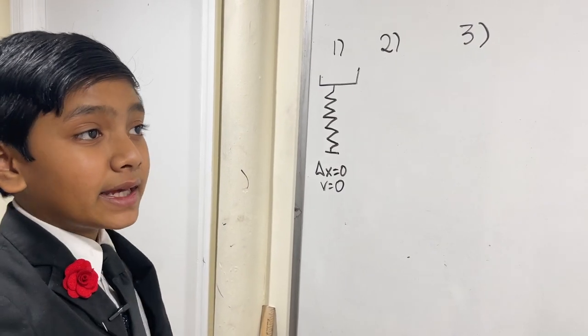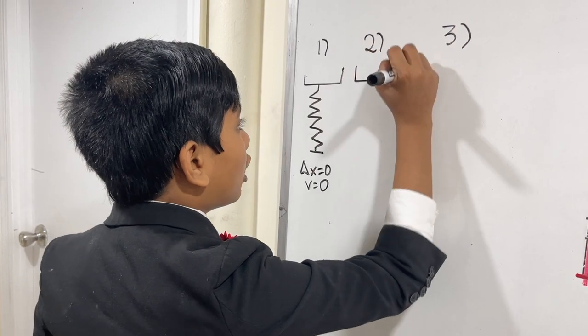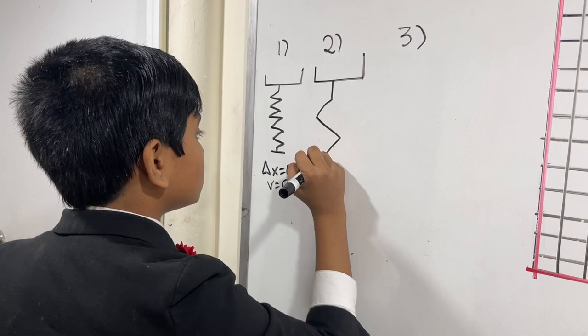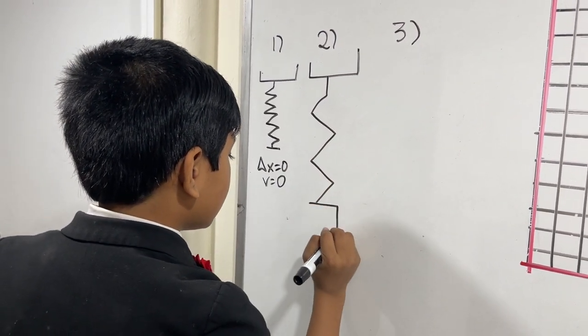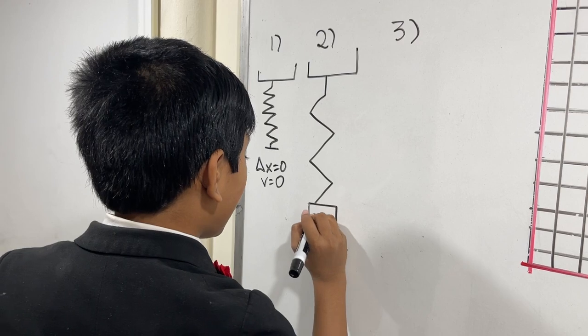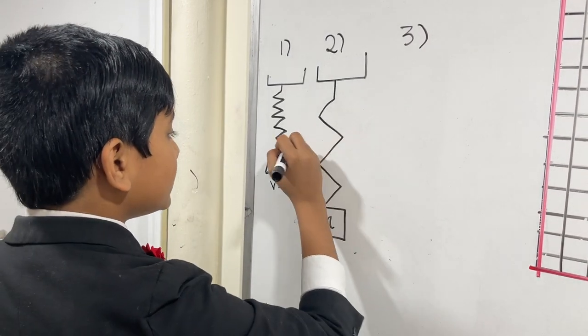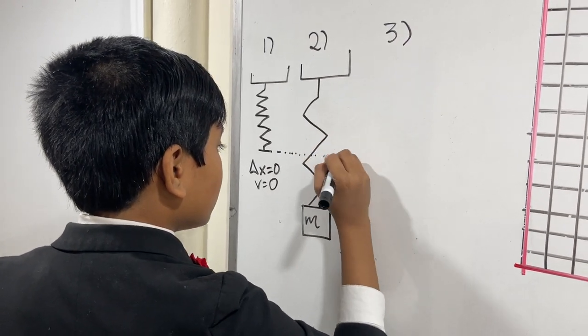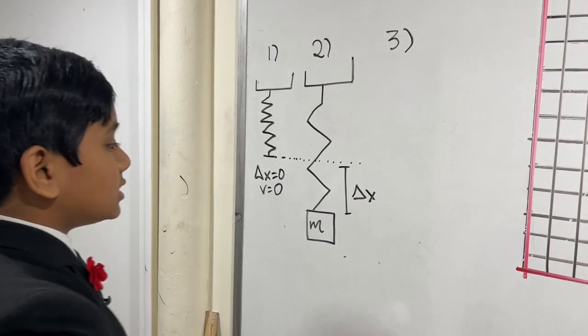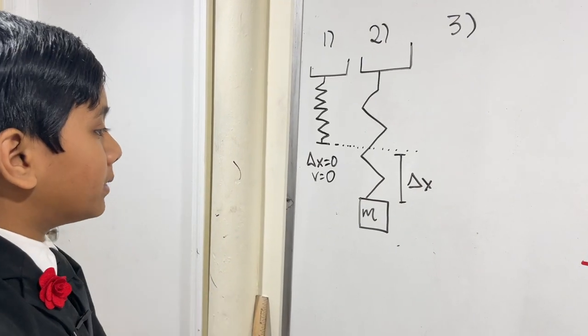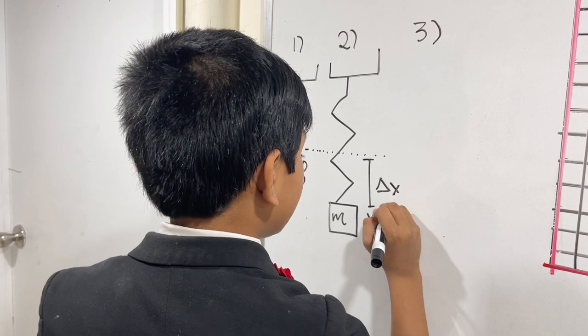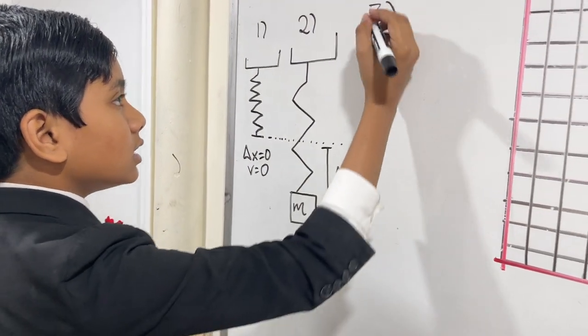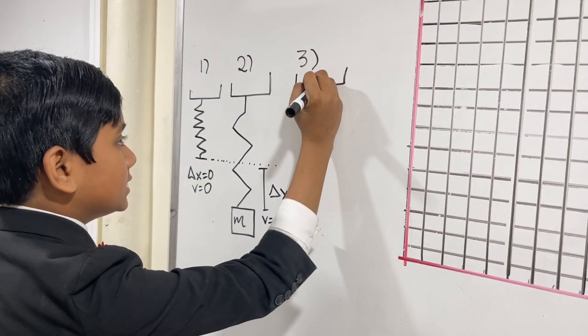So, in this state, and this is going to be a vertical spring, which means that it is hanging off from the ceiling. In this state, it is at its resting position. Delta x is 0, because it has not changed from its equilibrium. So, here, delta x is 0, and the velocity is 0, as well. It is at rest.